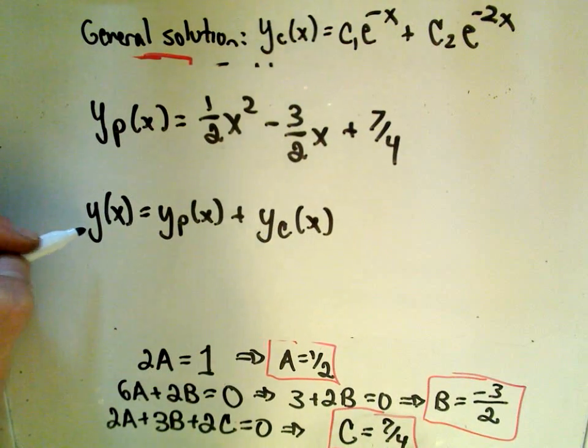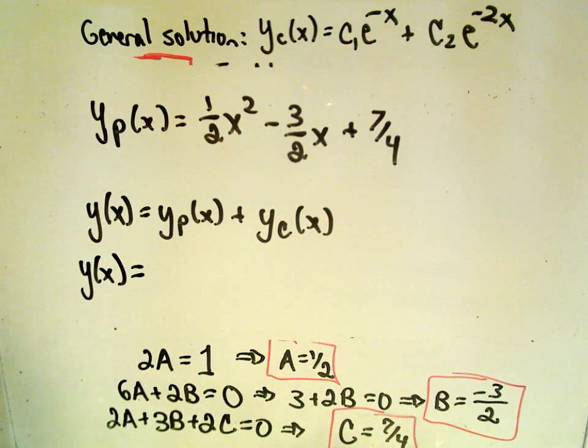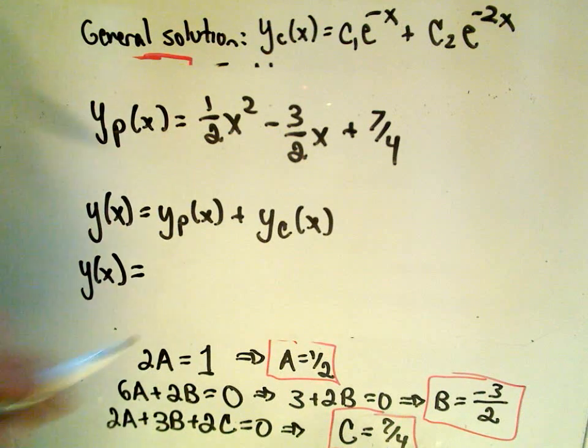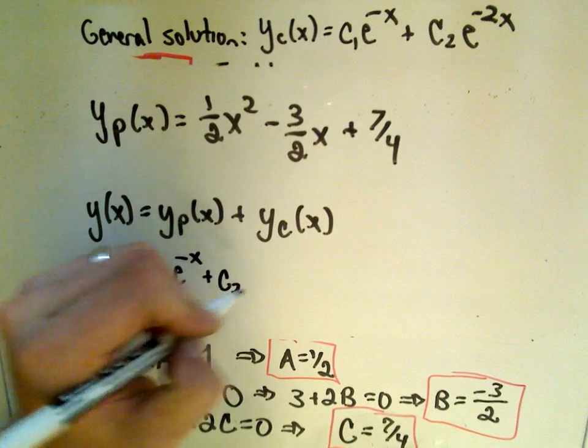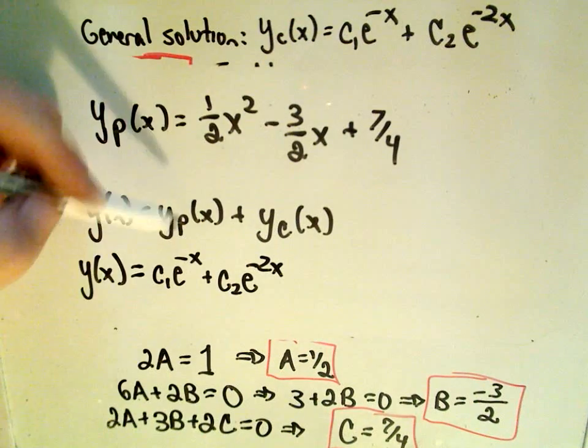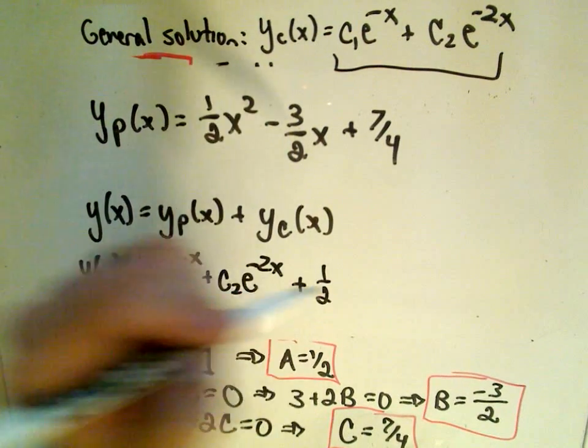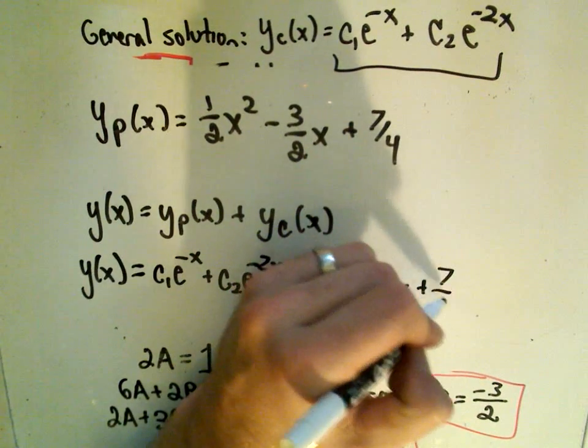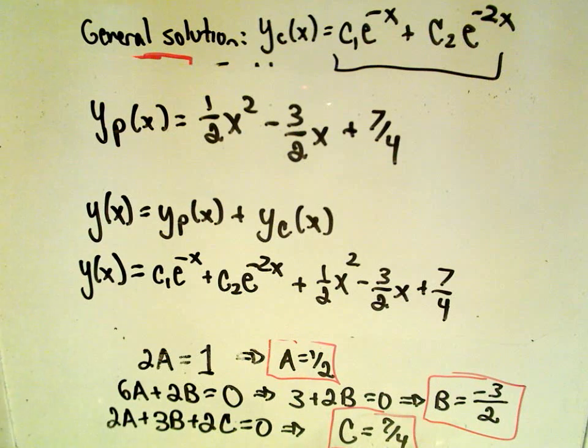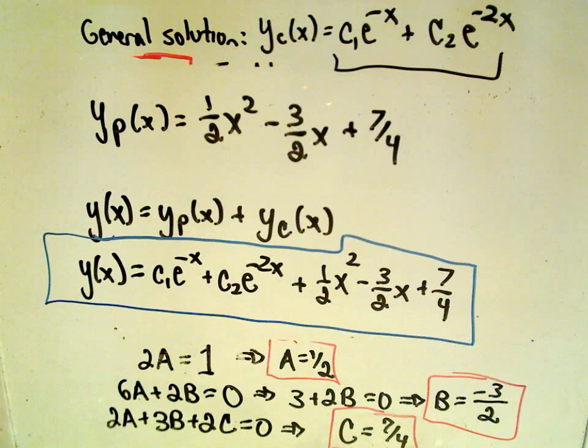This all produces the general solution. So the general solution to my original problem that we're trying to solve, it says basically now all we have to do is just add them together. So we'll get c1 e to the negative x plus c2 e to the negative 2x, so I'm writing them a little backwards, so I'm doing my y sub c part first, plus the particular solution, 1 half x squared minus 3 halves x plus 7 fourths. And that will now be our general solution to this original second order non-homogeneous differential equation that we're trying to solve.